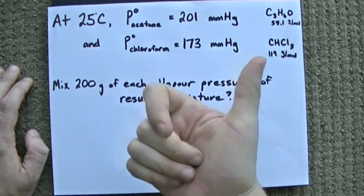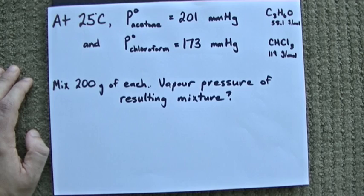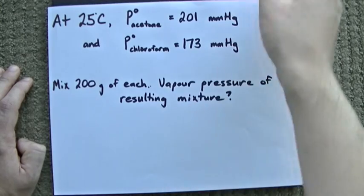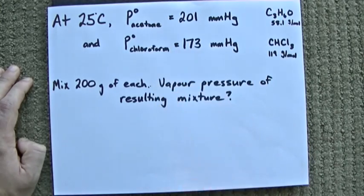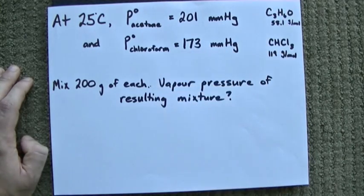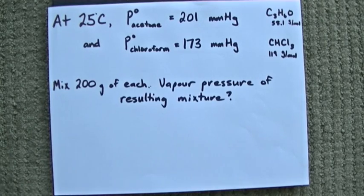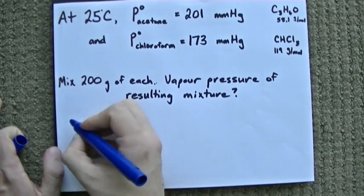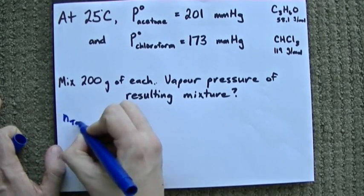Well, we're given the vapor pressure of each molecule on its own, or each solution, pure, and we only need the mole fraction to help us figure out what the combined one is. How do you find mole fraction? Well, we need the total number of moles in this container.